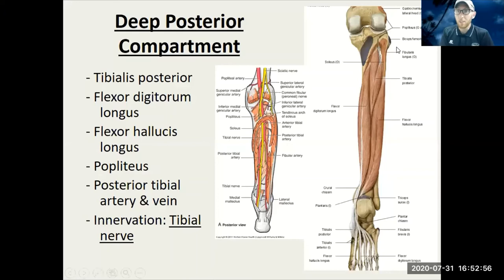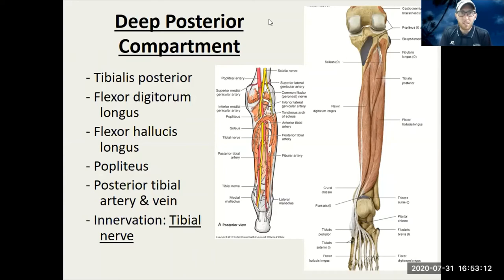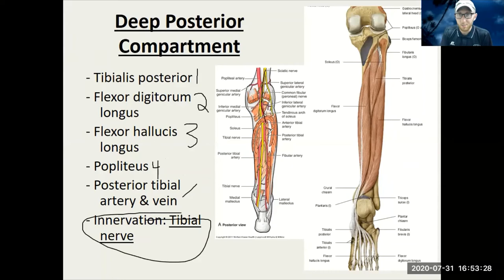So if you want to be able to dunk a basketball or jump really high, you gotta focus on that gastrocnemius. Now let's look at the deep posterior compartment muscles. We've got three main ones: tibialis posterior, flexor digitorum longus, flexor hallucis longus, and we'll throw popliteus in there as well. These are the main three with the artery, vein, and tibial nerve — because again, deep posterior means tibial nerve.